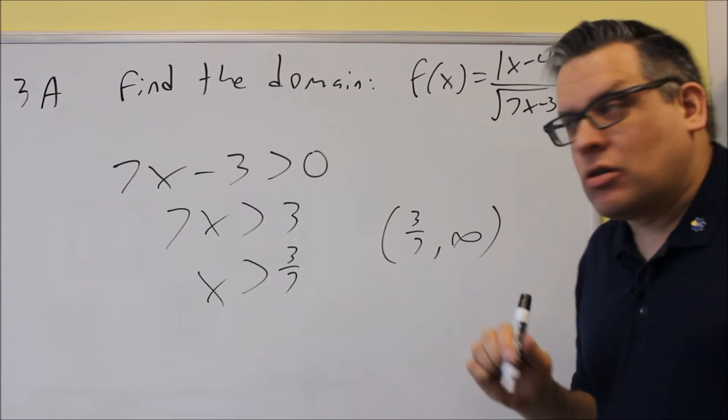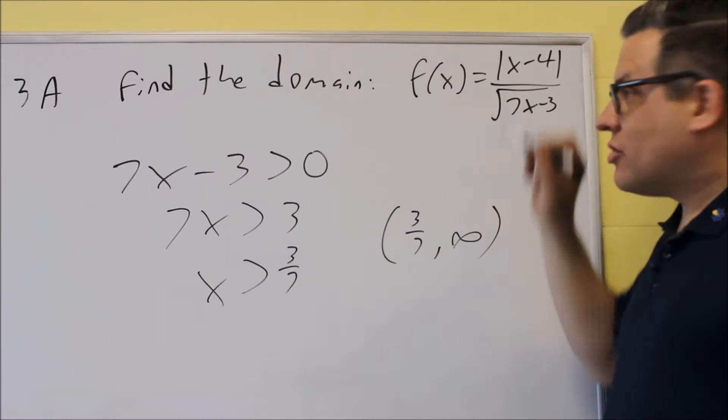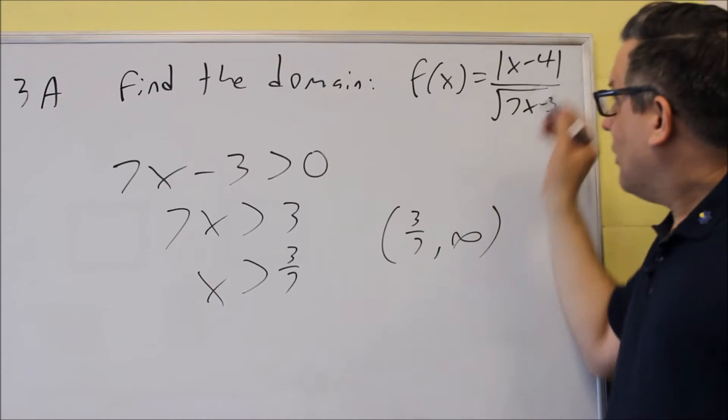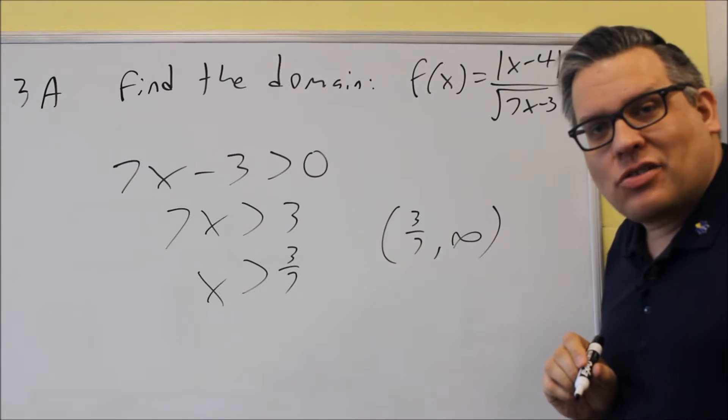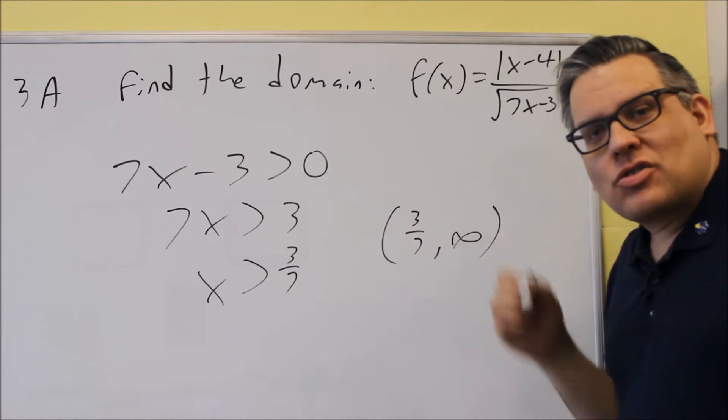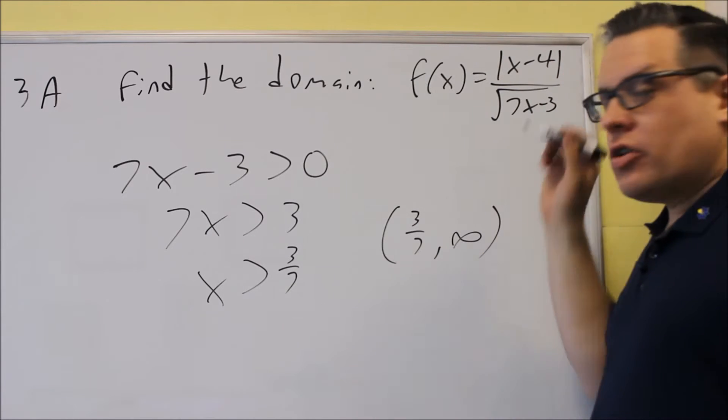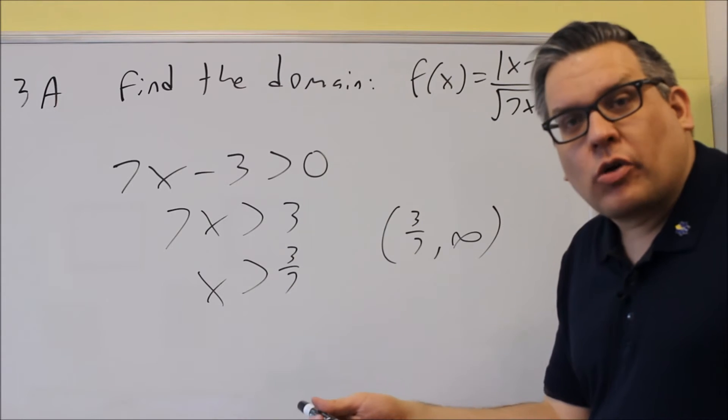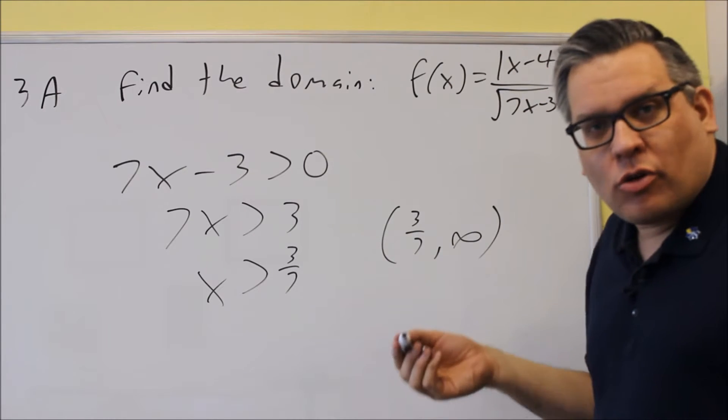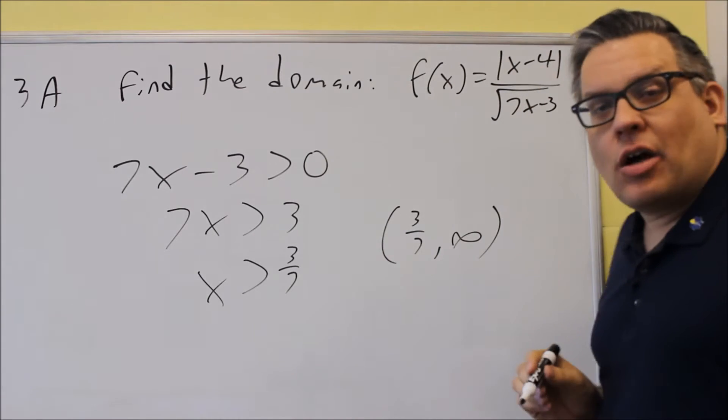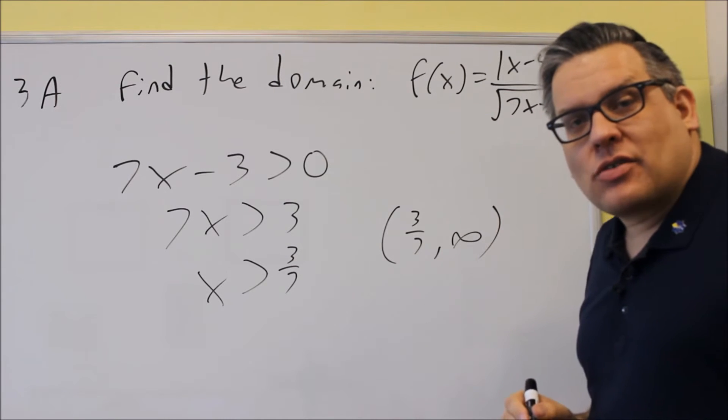Now what you might be thinking is, what do we do with the top part? Now the top part, there is no restrictions at all for the top. It's an absolute value, but no matter what I put in there for x, that's not going to make any difference. So in most cases, for the problems that you're doing here, you're looking for only where a square root is or dividing by zero. So on top, we don't have division by zero, we don't have a square root, therefore any number is allowed on top. So we only had to consider the denominator in this case.